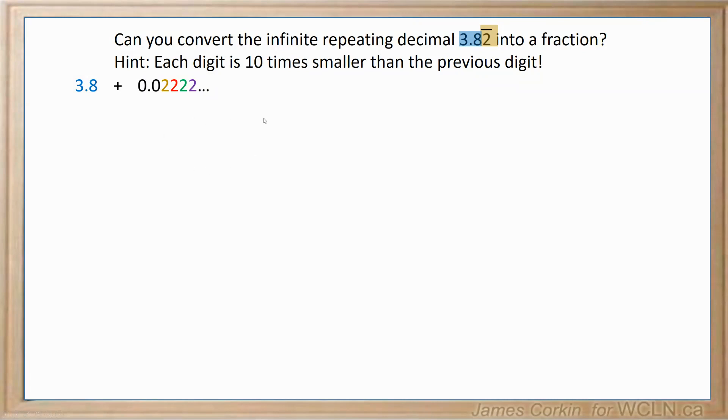So how do we turn each of these into fractions? Well, a non-repeating number is really easy to turn into a fraction, simply divide by the appropriate value of 10, or 100, or 1000. So it's 3.8, we only have one decimal place, so we divide by 10, that's 38 over 10.